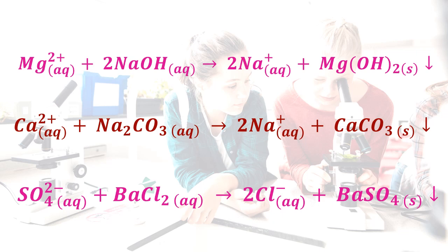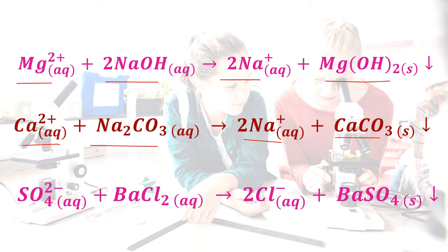We use sodium hydroxide, sodium carbonate, and barium chloride solutions for the precipitation of Mg2+, Ca2+, and sulfate ions. When sodium hydroxide solution is added to the Mg2+ solution, it forms sodium plus ions and a magnesium hydroxide precipitate. When Ca2+ ions are treated with sodium carbonate solution, it forms sodium plus ions and a calcium carbonate precipitate. When barium chloride is used for the sulfate solution, it forms chloride ions and a barium sulfate precipitate. We can easily remove those three precipitates from the solution.